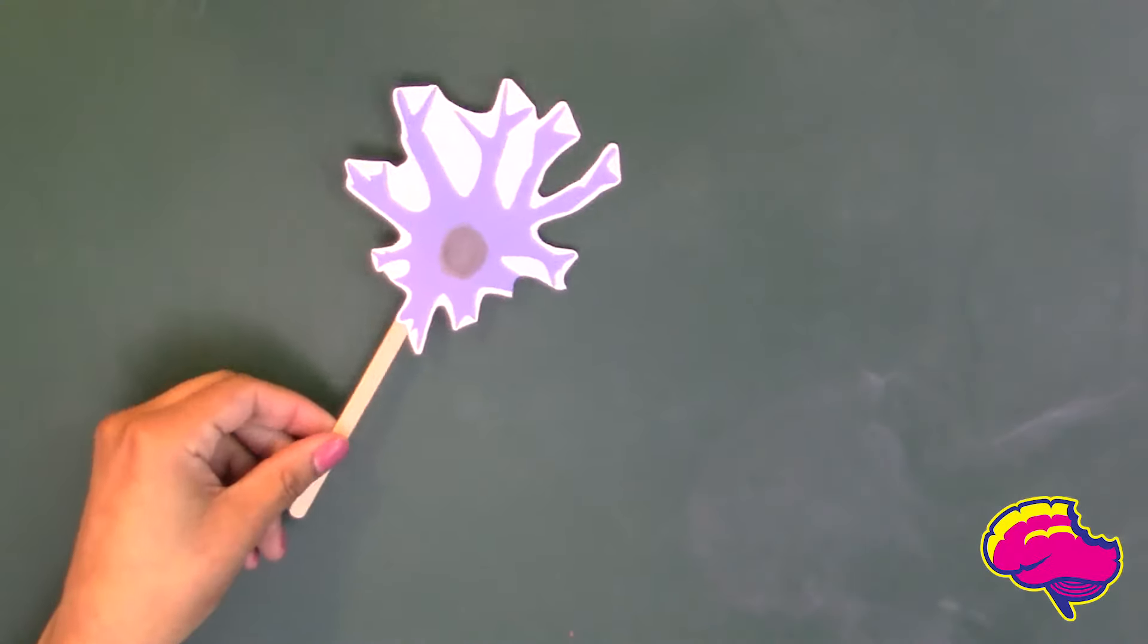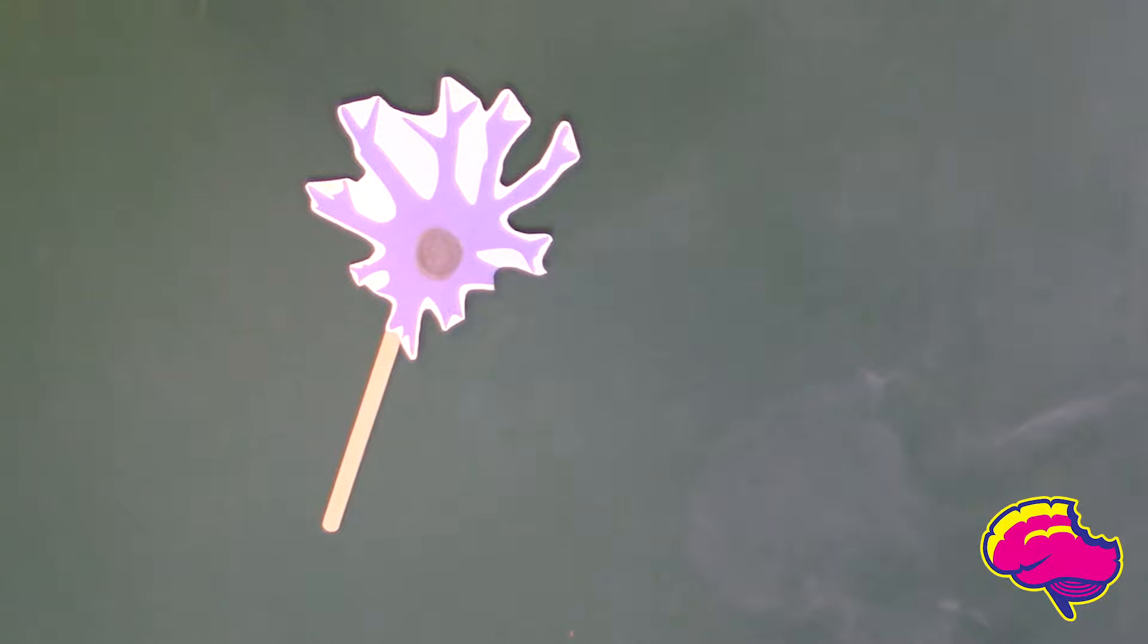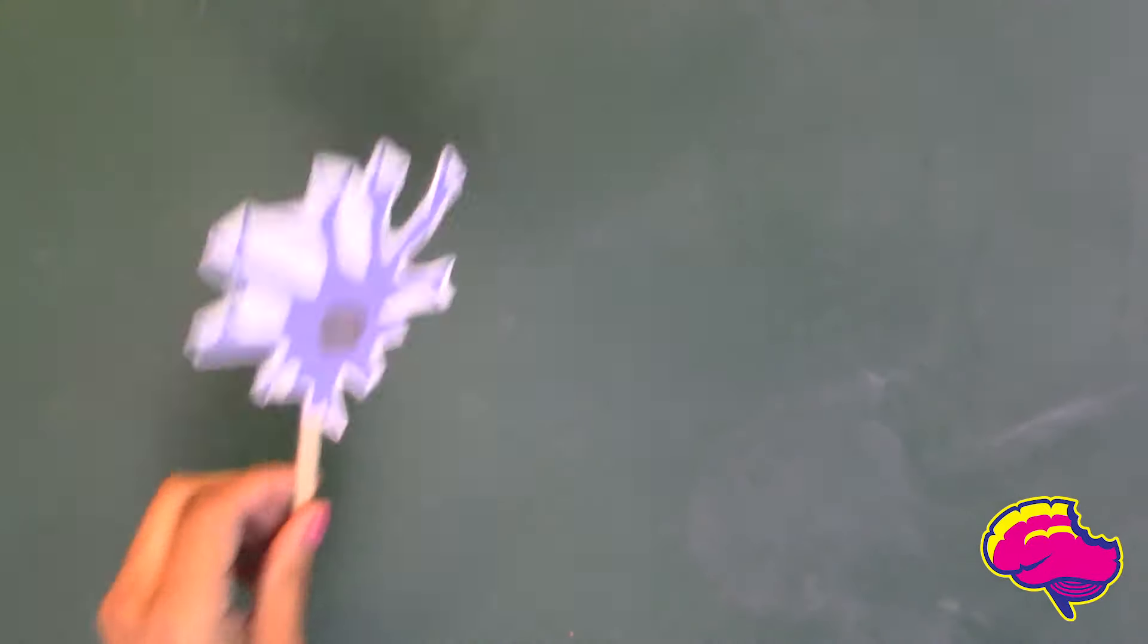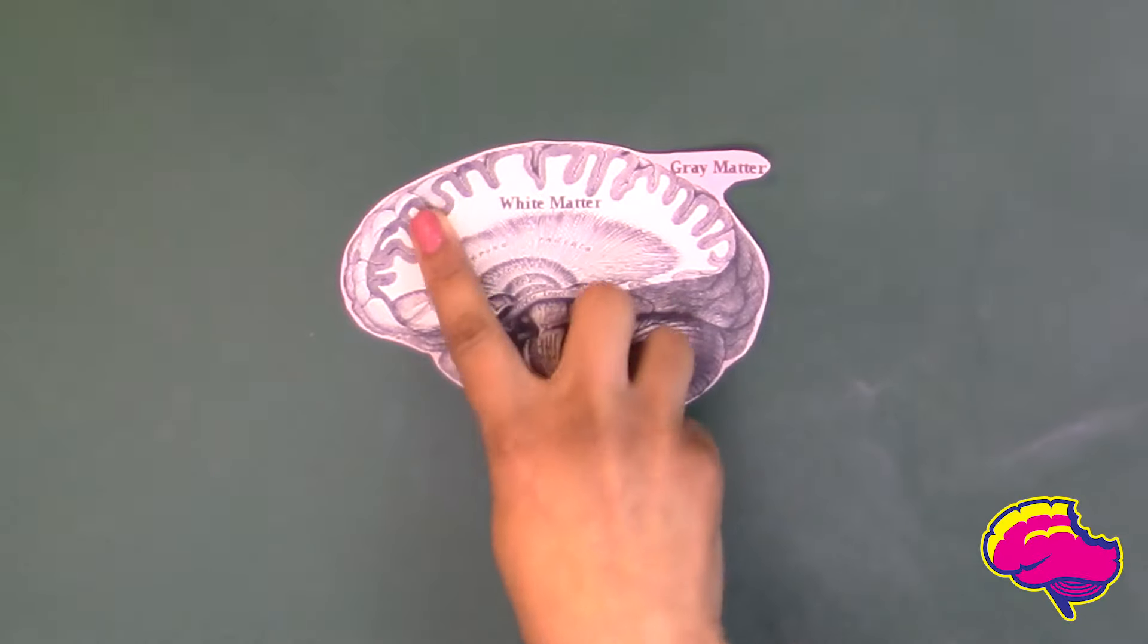These cells consist of a soma or cell body. The cell body, being gray in appearance, is visible to the naked eye and commonly referred to as gray matter.